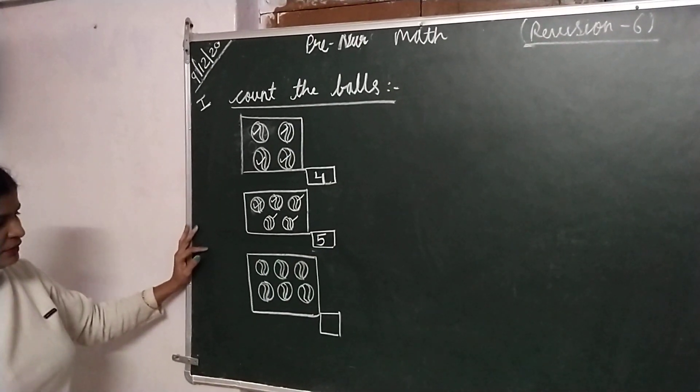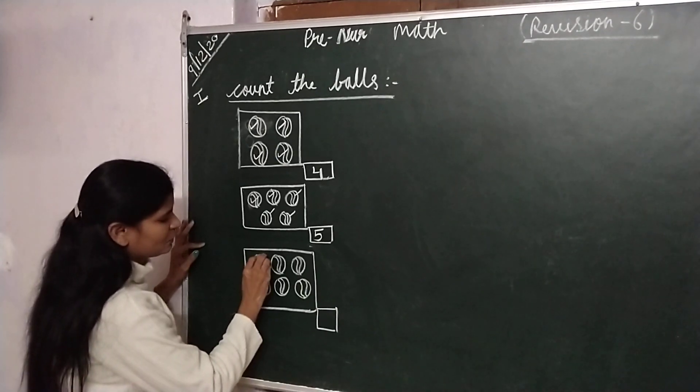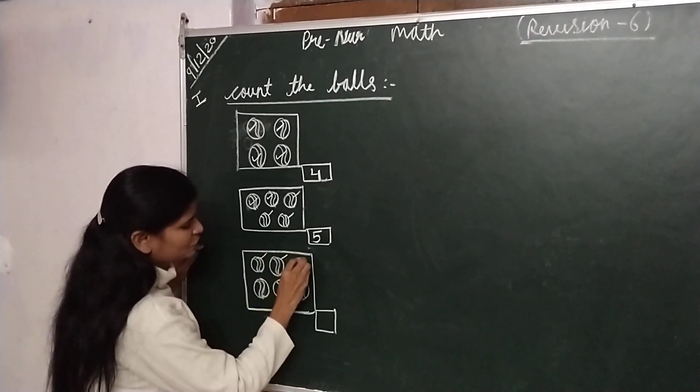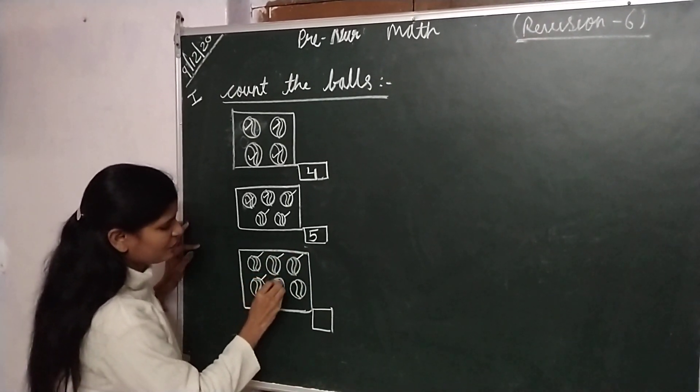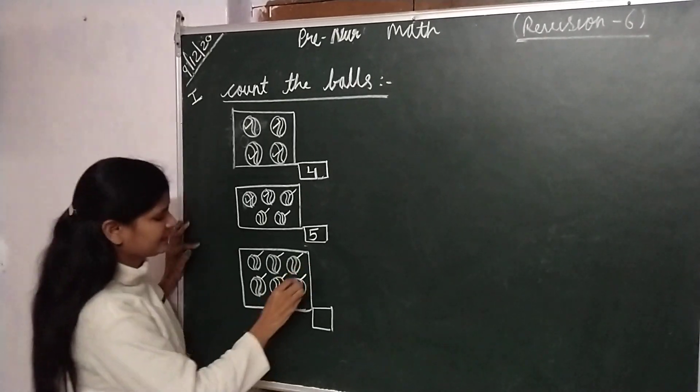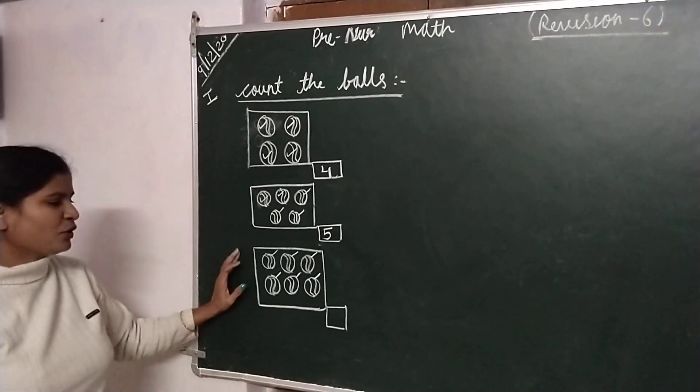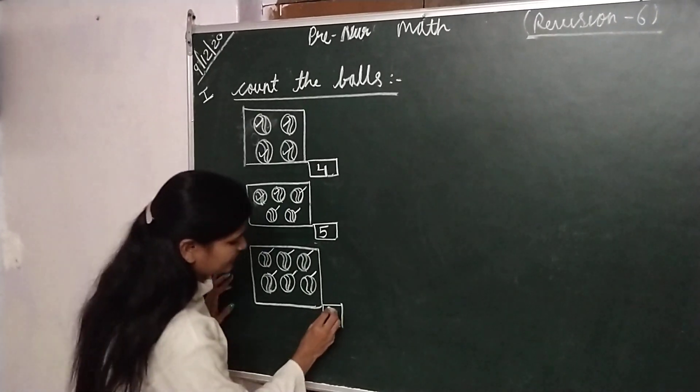In the next box we will count: 1, 2, 3, 4, 5, and 6. There are 6 balls in this box and we will write it: 6.